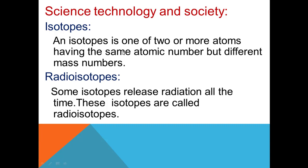Isotopes: an isotope is one of two or more atoms having the same atomic number but different mass number. Two or more atoms which have the same atomic number but different mass number are called isotopes. The atomic number is the number of protons present in the nucleus of an atom.